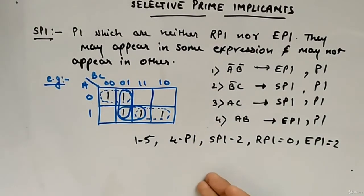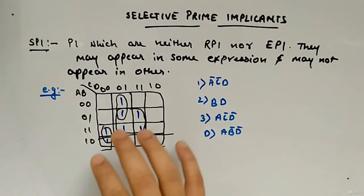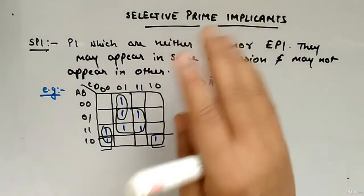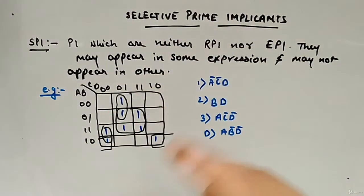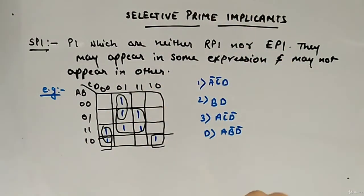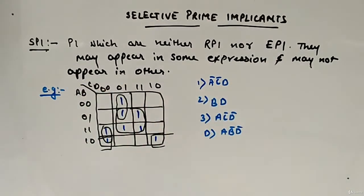We will see one more example so that you will get a better picture. Now let's look at this example. Here we will try to calculate all of it: prime implicants, implicants, essential prime implicants, redundant prime implicants, and selective prime implicants — everything we will calculate.